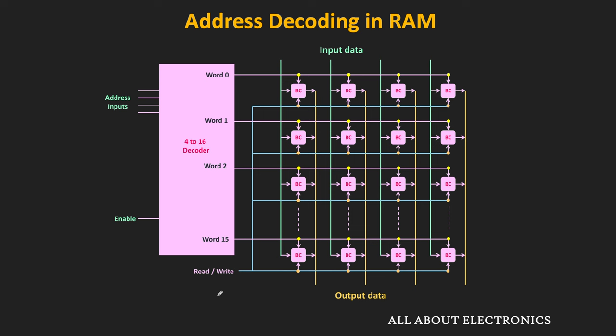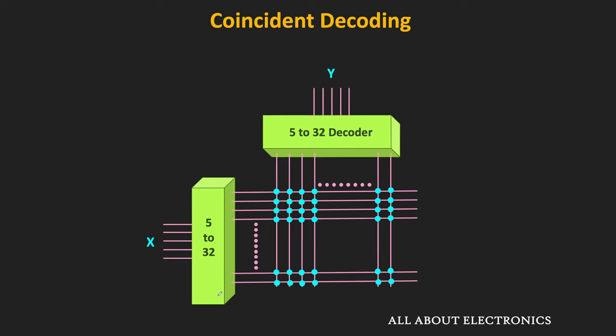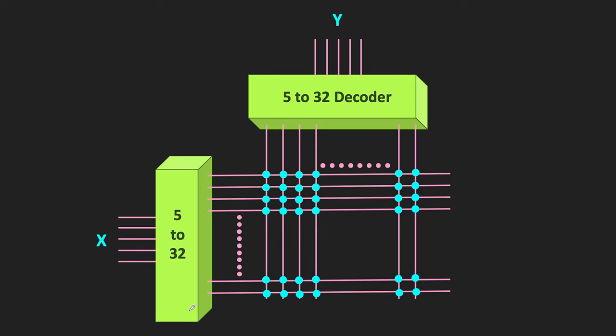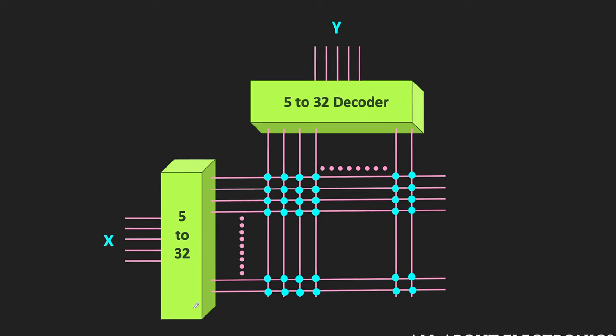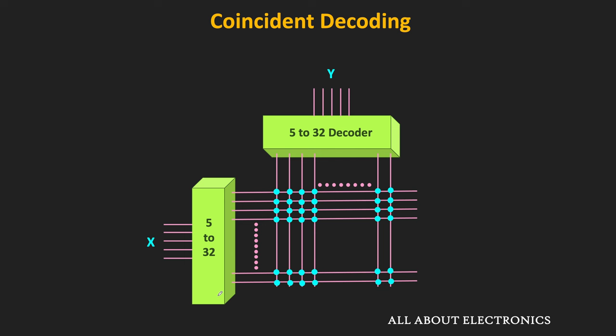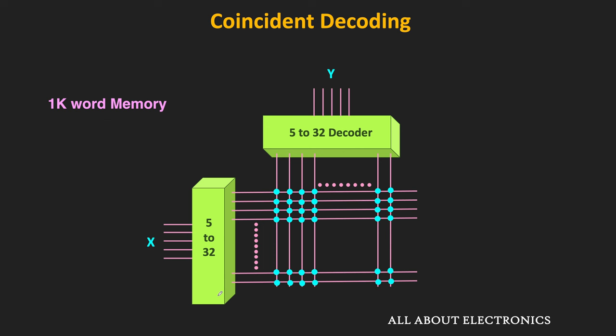To avoid this problem, coincident decoding is used in the memory. In this 2-dimensional decoding, memory cells are arranged so the cell arrangement remains close to a square structure. Instead of using a single k-input decoder, two k/2-input decoders are used. For example, for a 1K word memory, instead of a single 10-input decoder, two 5-input decoders are used.